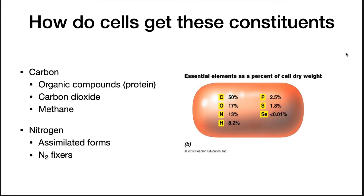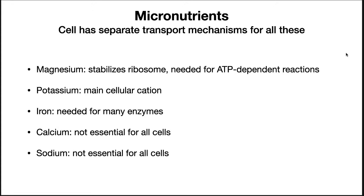Many microorganisms can obtain nitrogen from inorganic compounds, such as nitrate or ammonia, while others require organic sources, most often proteins. Some bacteria and archaea can fix nitrogen from nitrogen gas. Organisms also need micronutrients in quantities of less than 1% but more than 0.1% of their dry weight. Magnesium stabilizes the ribosome, membranes, and other structures, and is necessary for ATP-dependent reactions.